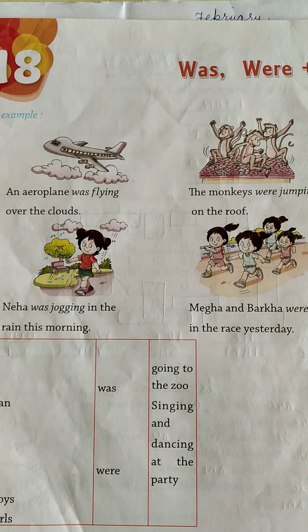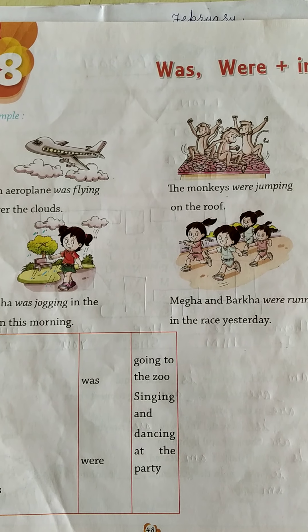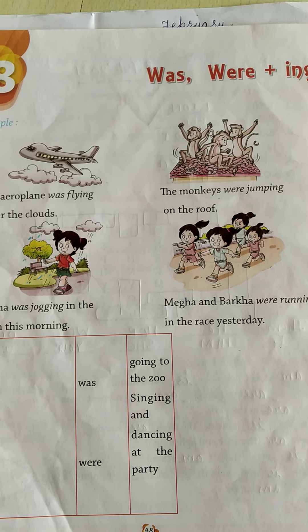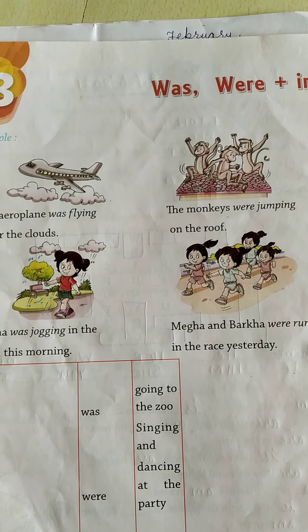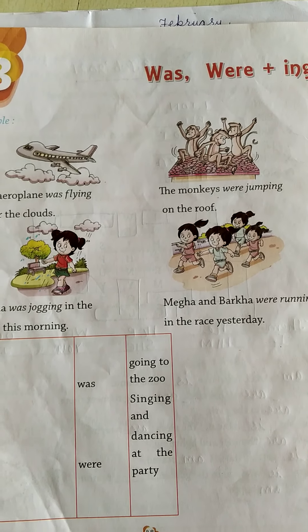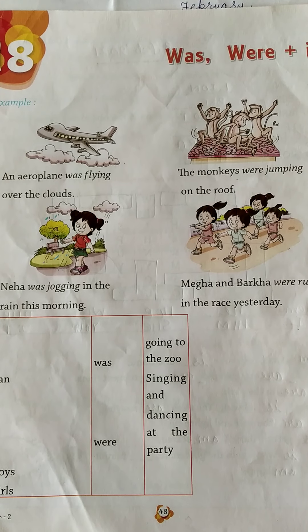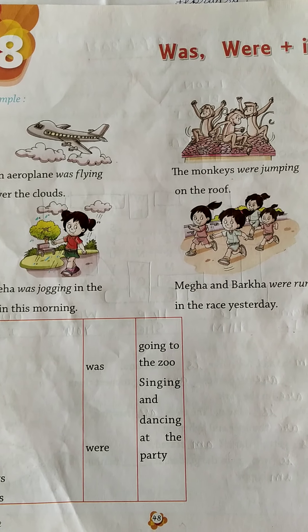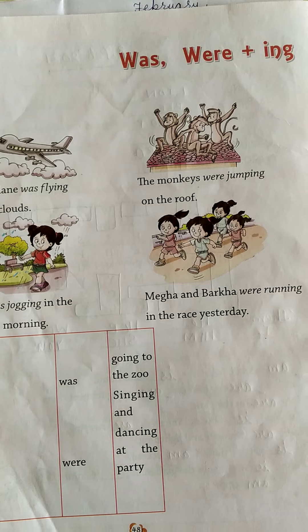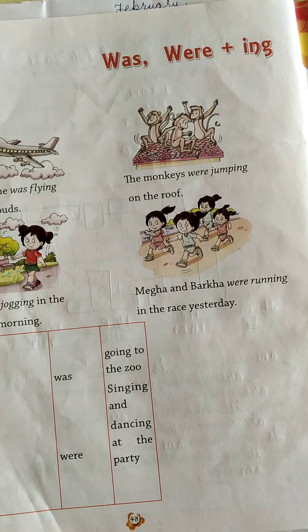First of all, was and were are always used with the past tense — things which have happened previously. At that time, we will use was and were.